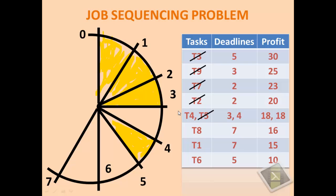Next is T5 which is having deadline as 4. We can allocate 3 to 4 slot to T5.